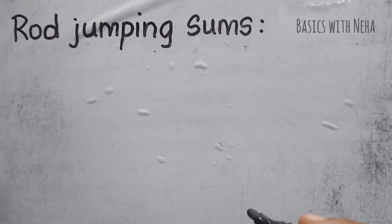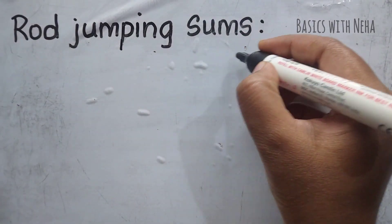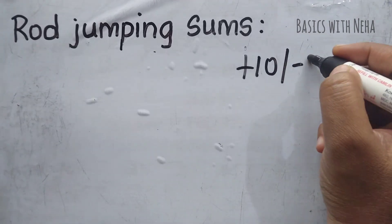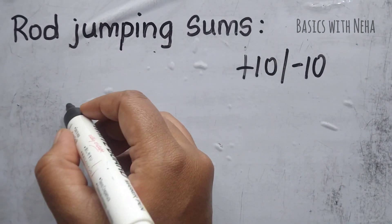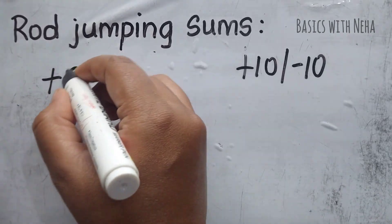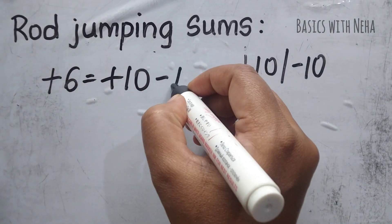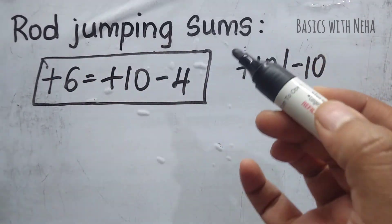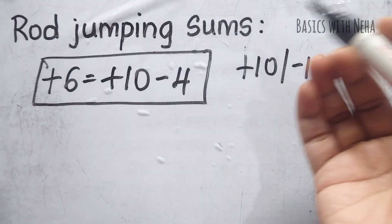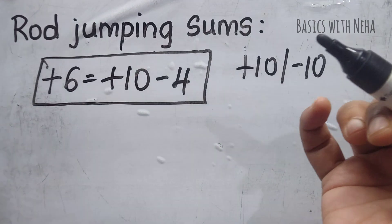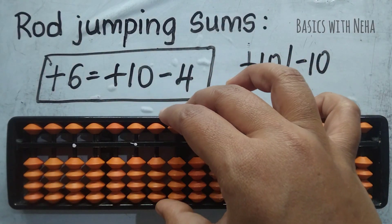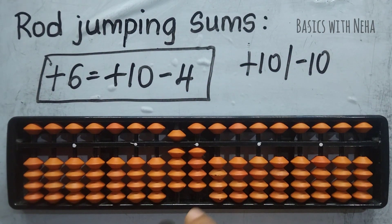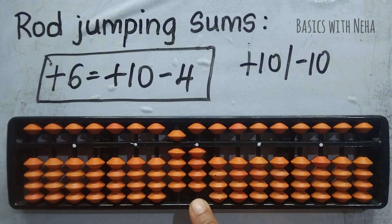Rod jumping sums are used for big friends and the combination formula, especially when there is plus 10 or minus 10. For example, if I have a formula: plus 6 equals plus 10 minus 4 — this is the big friends formula for plus 6, and it is used when the beads are not available. Let me show you a situation: imagine on the tool I have 94 and I need to add 6. To add 6, I go to the ones place, and I don't have 6 beads available directly, so I use the big friends formula, which is plus 10 minus 4.